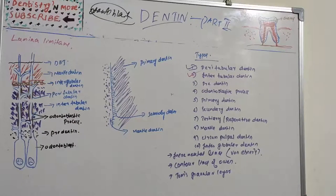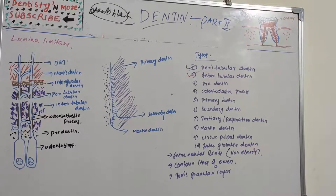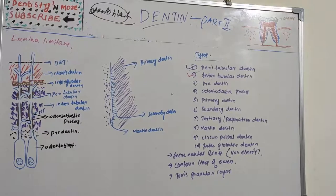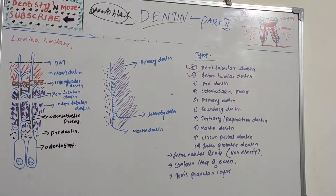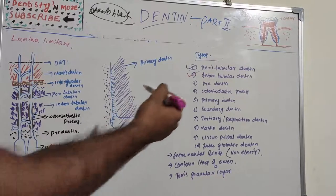The collagen fibrils of intertubular dentine range from 0.5 to 0.2 micrometers in diameter. Hydroxyapatite crystals are formed along the fibers with their long axis oriented parallel to the collagen fibers. Intertubular dentine is well mineralized but not as much as peritubular dentine, and it provides tensile strength to dentine.